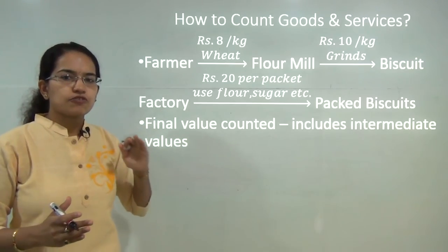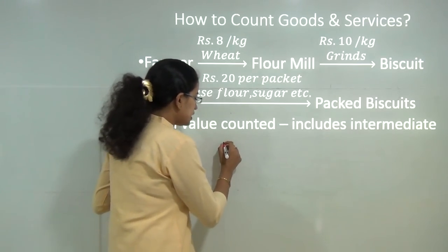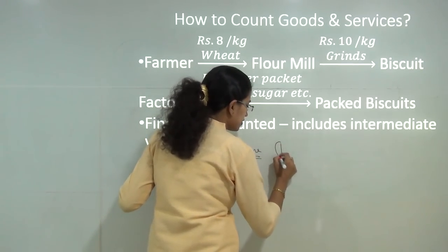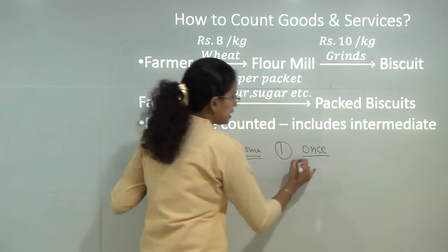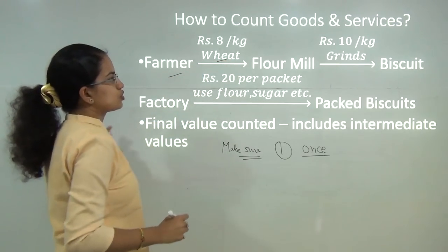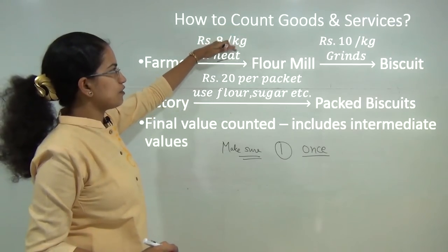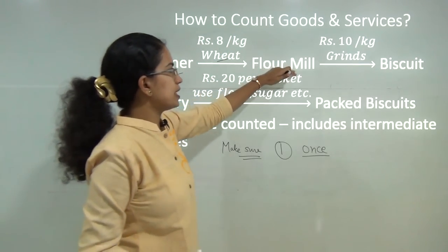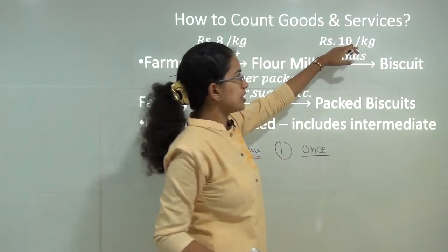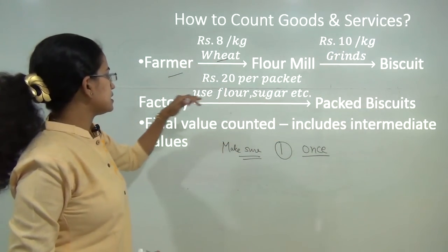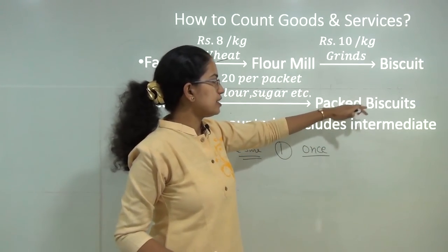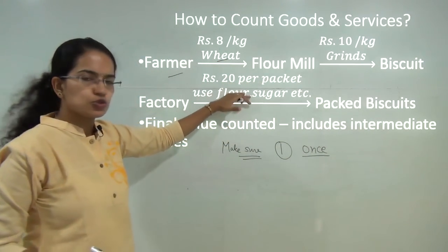To avoid any kind of double counting, we need to make sure that the product we are adding is added only once — there is a single addition of the product. For example: the farmer supplies wheat to the flour mill at a rate of rupees 8 per kg. The flour mill grinds the wheat and provides it to the biscuit factory at the rate of rupees 10 per kg. And finally, this biscuit factory uses flour, sugar, etc. and packaging, and finally provides the packed biscuits at a rate of rupees 20 per packet.